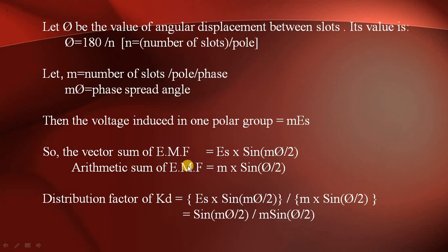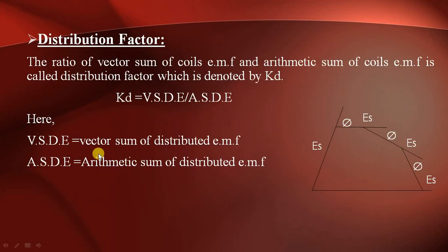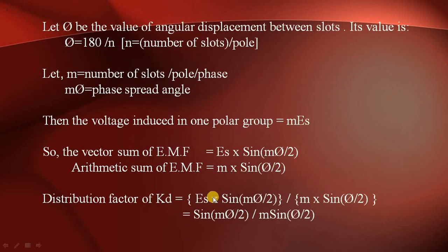So the vector sum and the arithmetic sum expressions have been established. The distribution factor Kd is defined as vector sum of distributed EMF divided by arithmetic sum of distributed EMF.